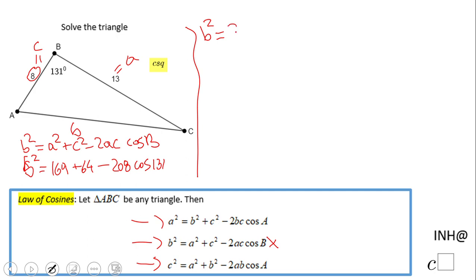I end up with 369.46, and if I want to find b, I'm going to take the square root of this. I end up with, approximating to the nearest tenth, 19.2. So we have side b equals 19.2.